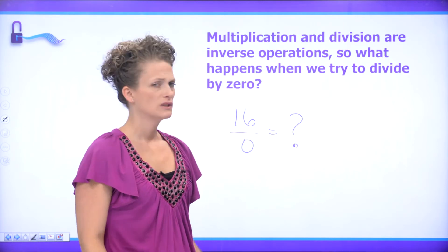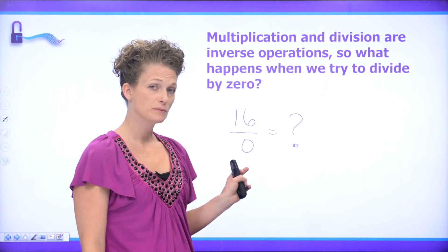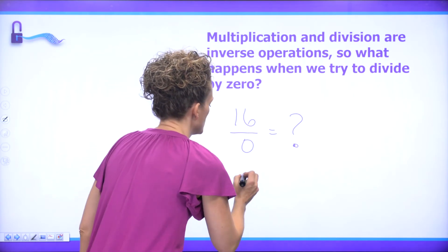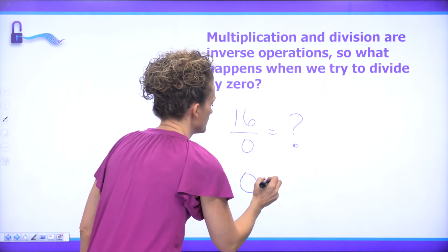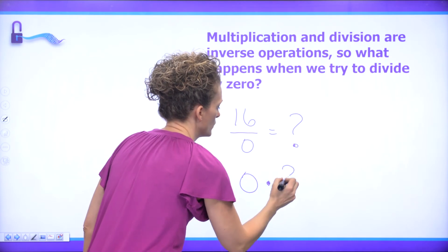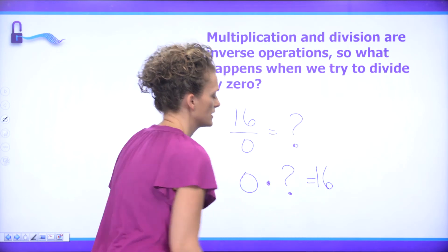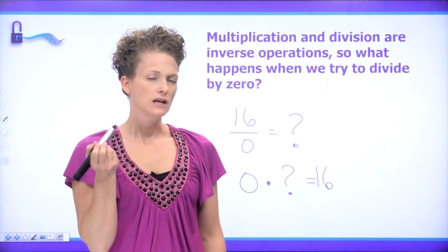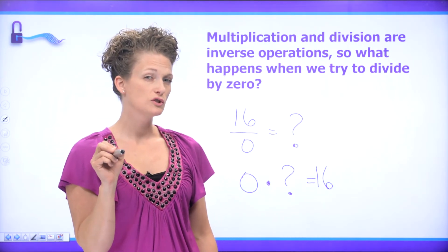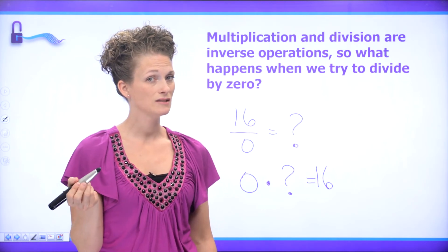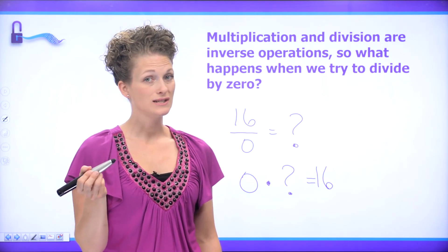Well let's rewrite this as a multiplication question and see what happens. Zero times whatever this number is equals 16.